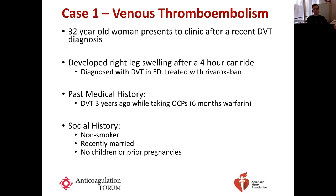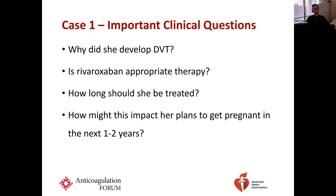As I reflect on this case, a few questions come up. First, why did she develop a DVT, and is there anything that really kicked this off? Second, is rivaroxaban an appropriate therapy choice given her case features? Third, how long should we think about treating her? And finally, this is a young woman recently married who may want to get pregnant — how might her recent DVT and the choice of anticoagulant impact her desire to conceive over the next one to two years, and how would we counsel her?